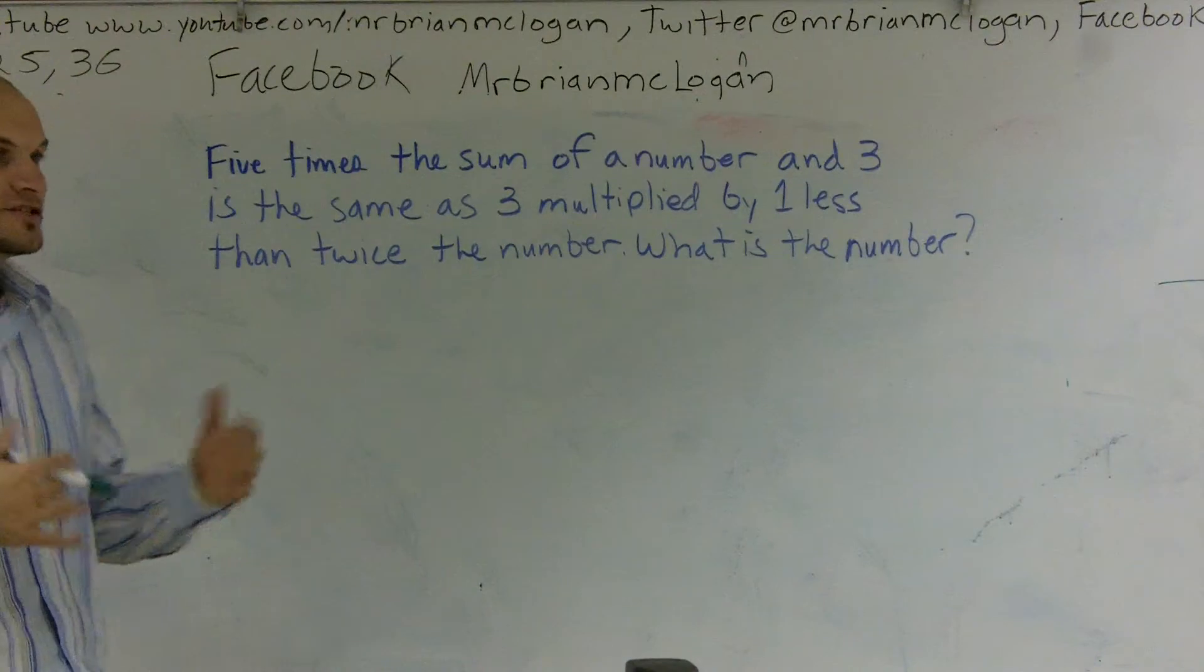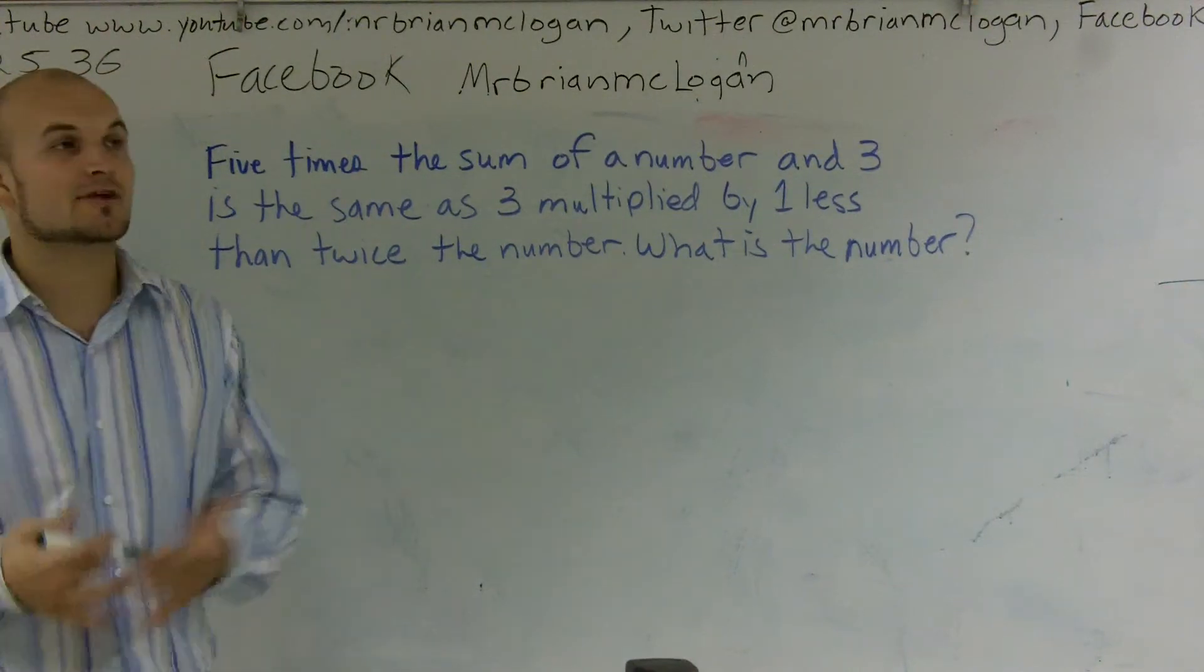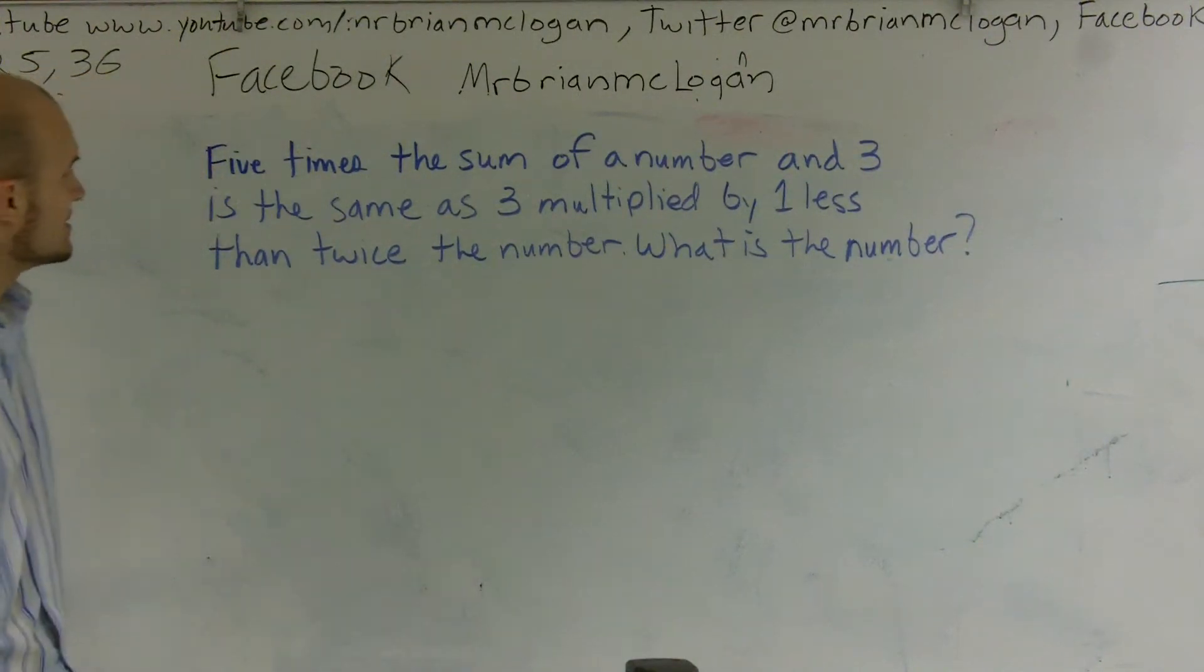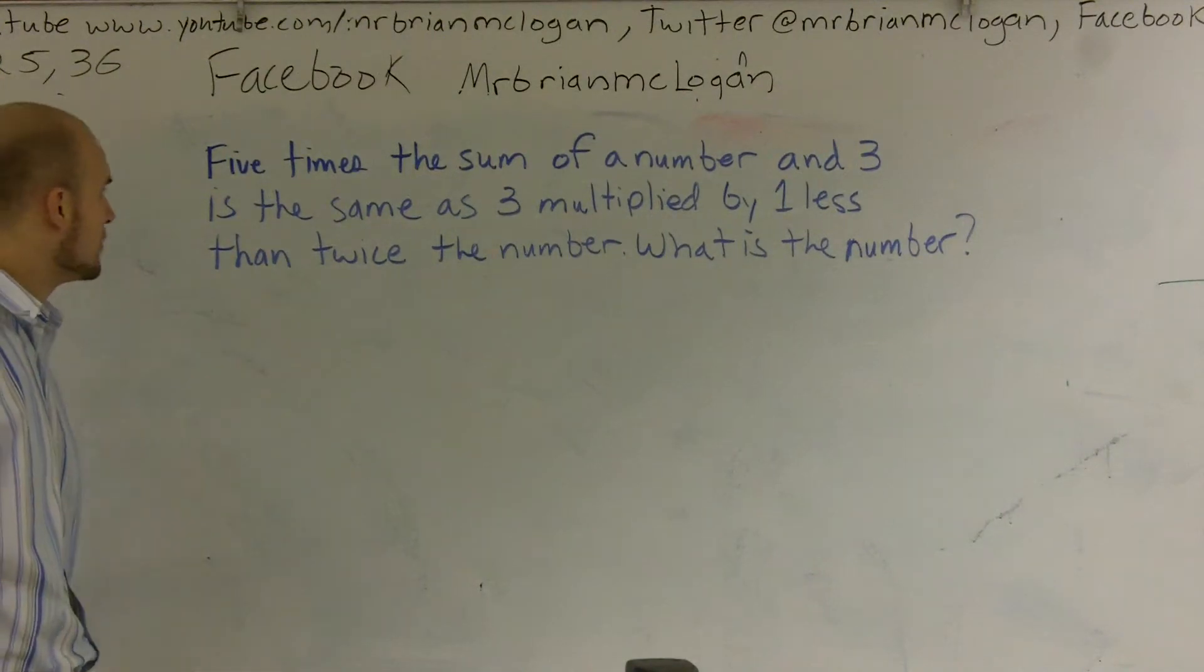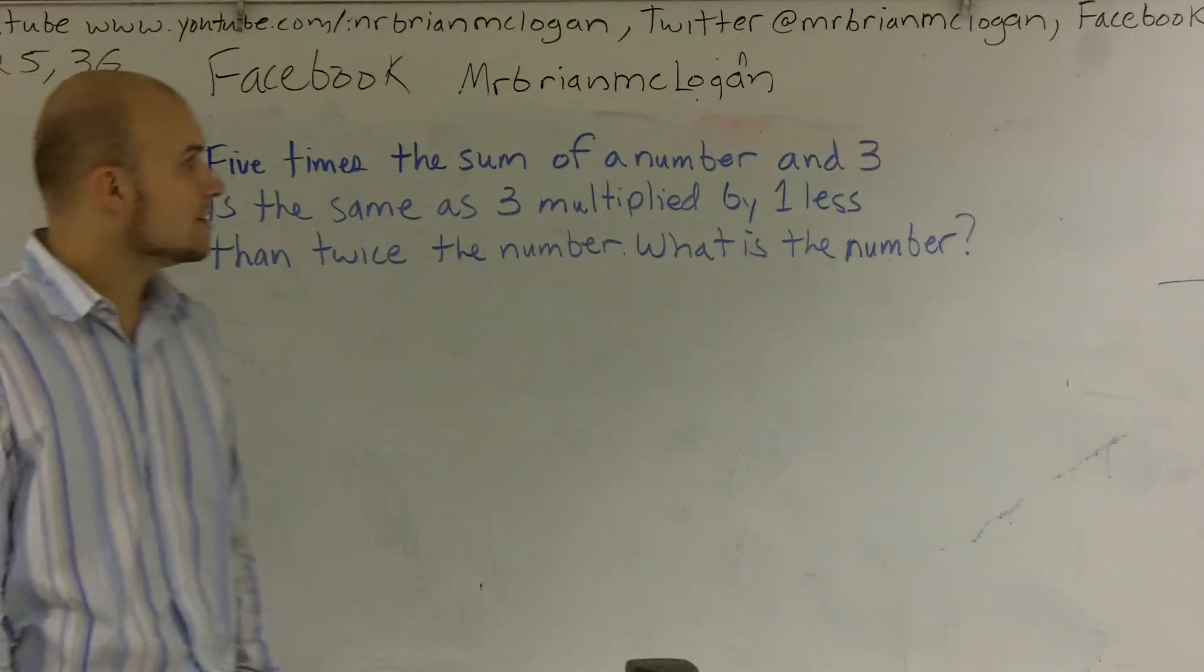The first process is to read it. You got to read the word problem. So what I'm going to do is I'm going to read the word problem, and it reads: five times the sum of a number and three is the same as three multiplied by one less than twice the number. What is the number?